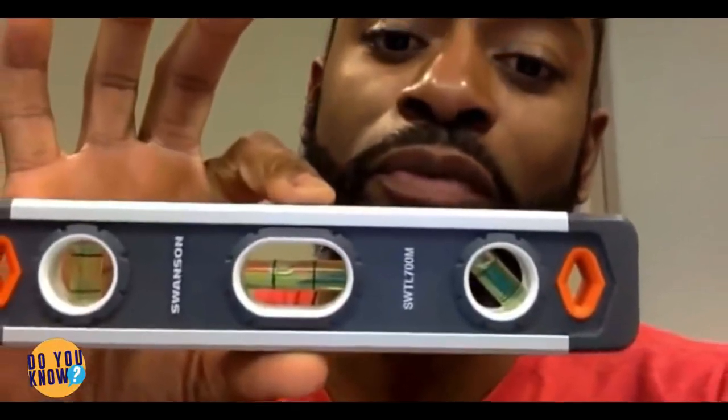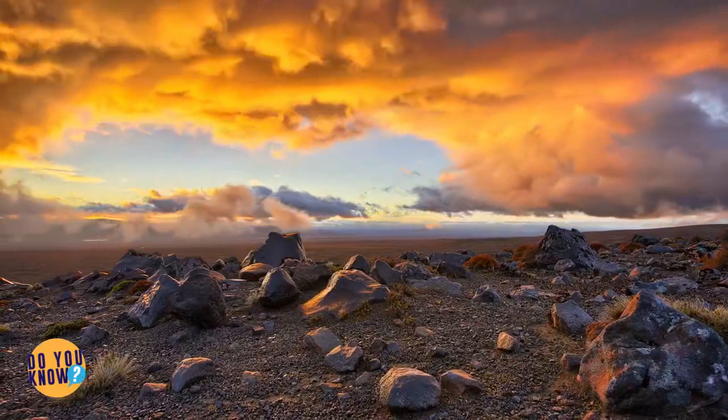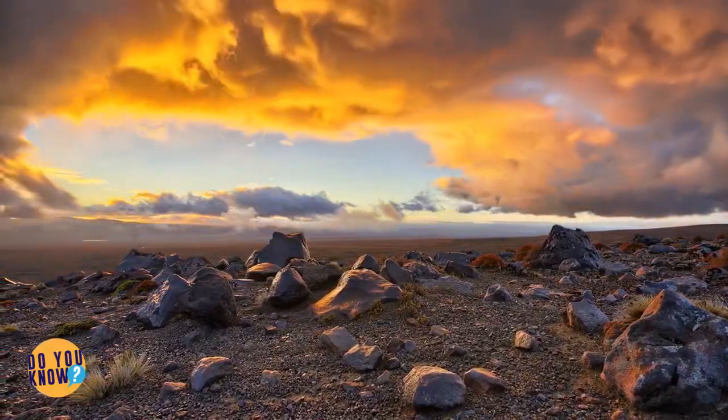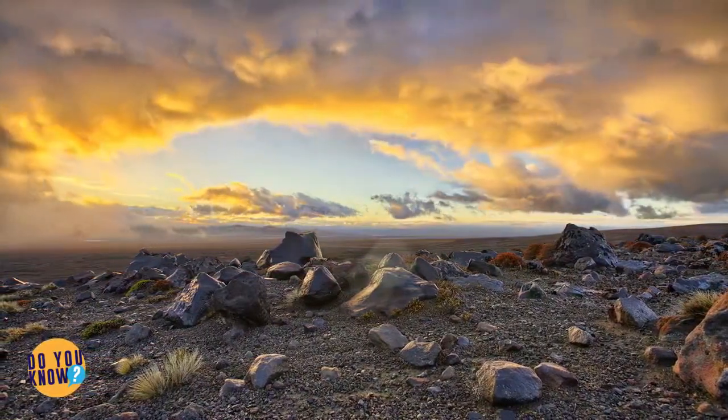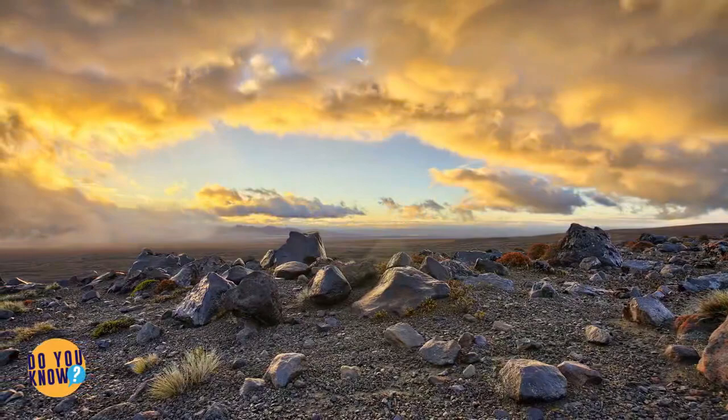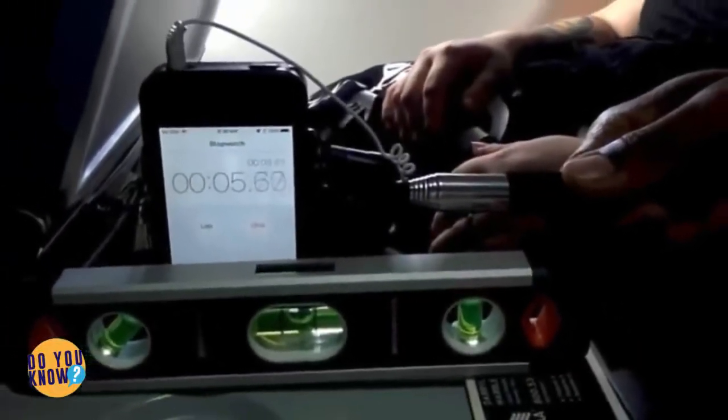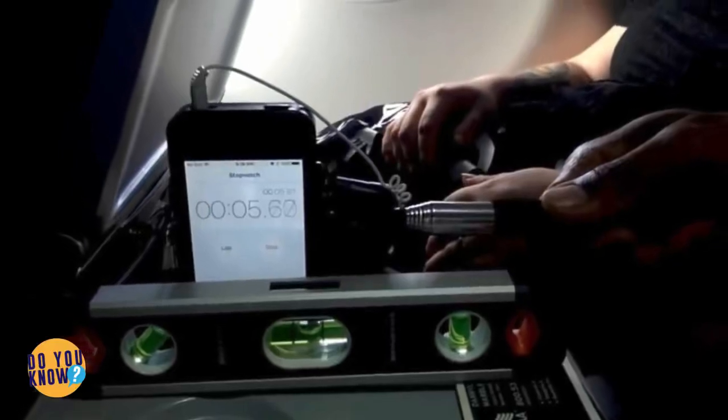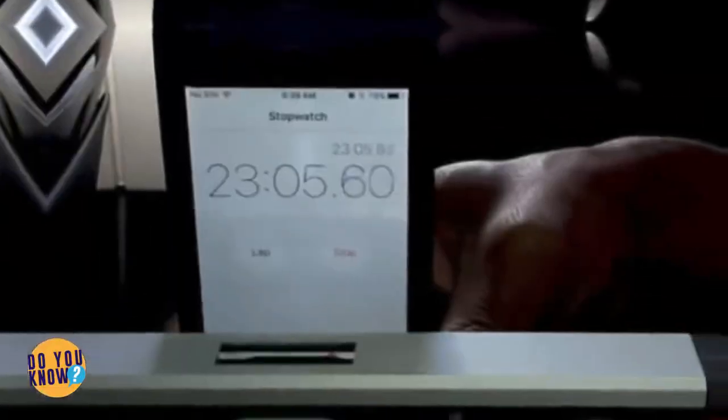Marvel rested the spirit level on the armrest of his seat and proceeded to record a time-lapse video of it for 23 minutes. According to his calculations, the plane traveled more than 203 miles, which should have resulted in the compensation of 5 miles of curvature. As you'll see, there was no measurable compensation for curvature. The spirit level stayed constant for 23 minutes. And according to Marvel, this proves that the Earth is flat. Once altitude is reached, the airplane flies at a constant altitude, he wrote. Pilots have come forward to testify that there's no compensation for curvature during flight.